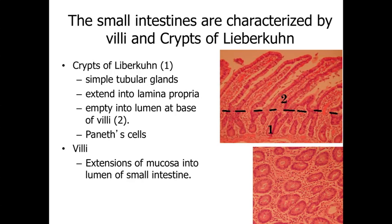Moving into the small intestine, the epithelial appearance changes. Instead of pits and glands as in the stomach, the small intestine has villi and gland-like structures called crypts of Lieberkühn or intestinal glands — relatively short glands extending into the lamina propria, ending above the muscularis mucosa. At the base of these crypts are Paneth cells, a pink-staining cell type. The villi are finger-like extensions of the mucosa — lamina propria lined by simple columnar epithelium extending into the lumen — increasing surface area for digestion and absorption.